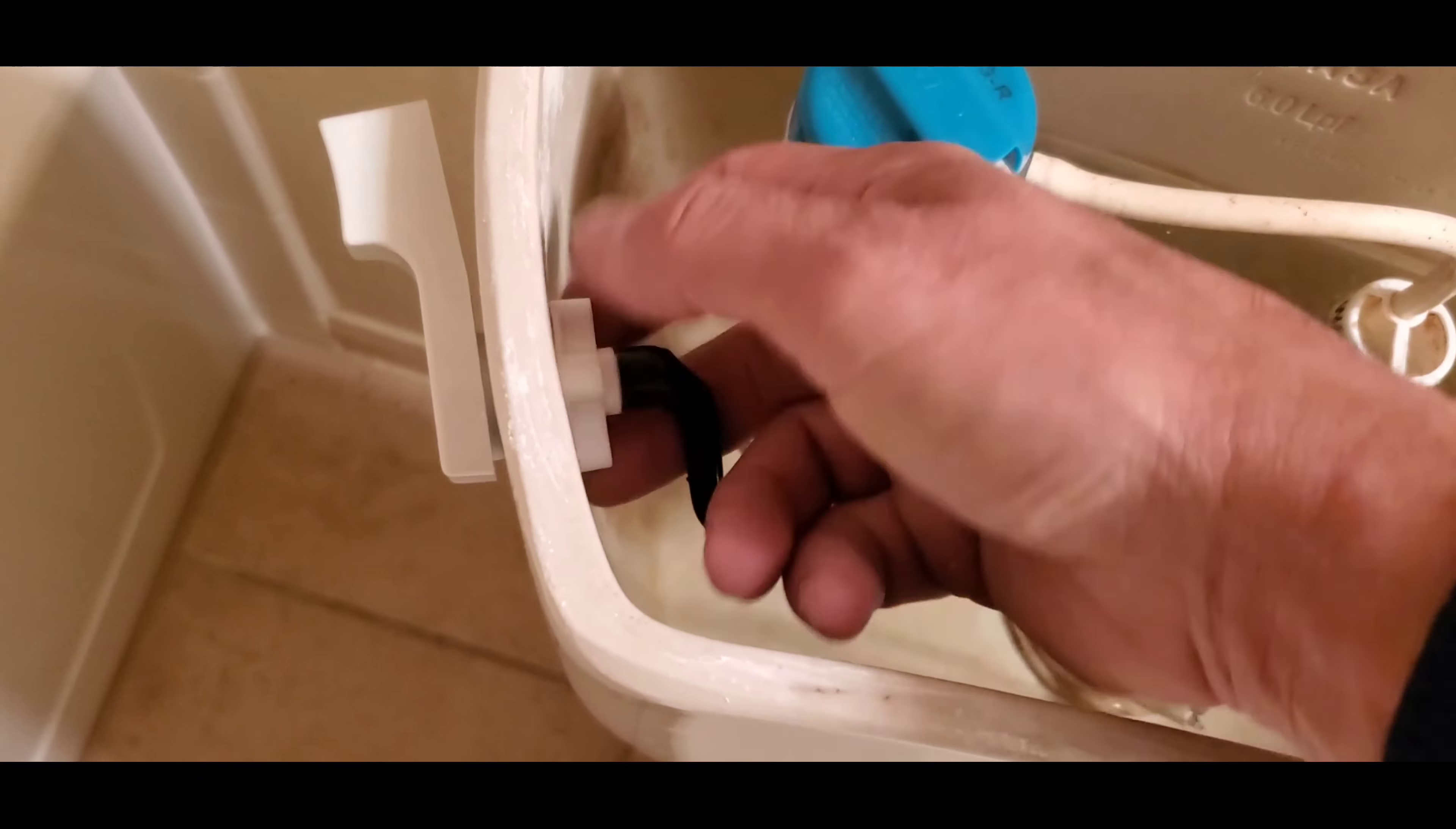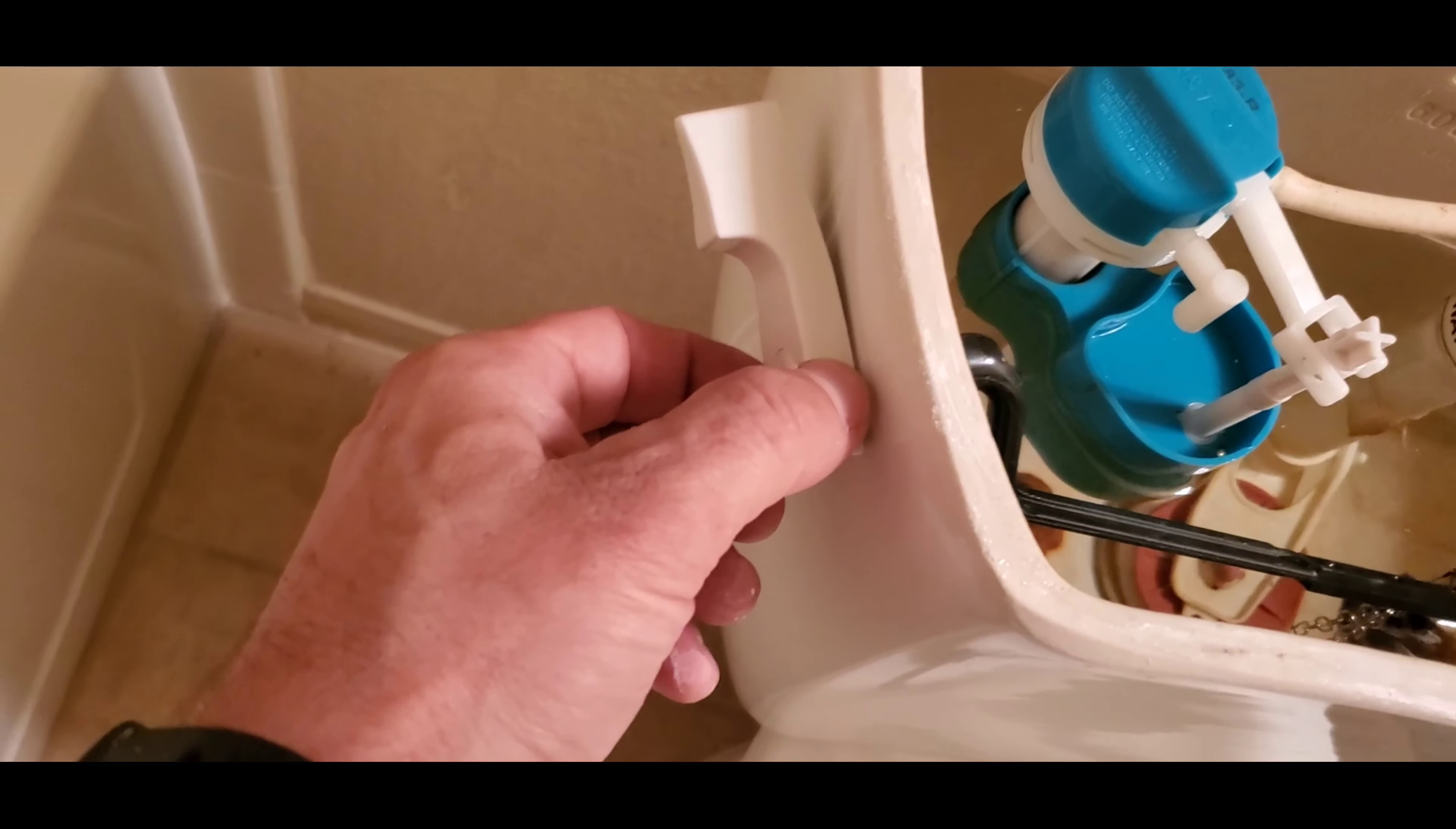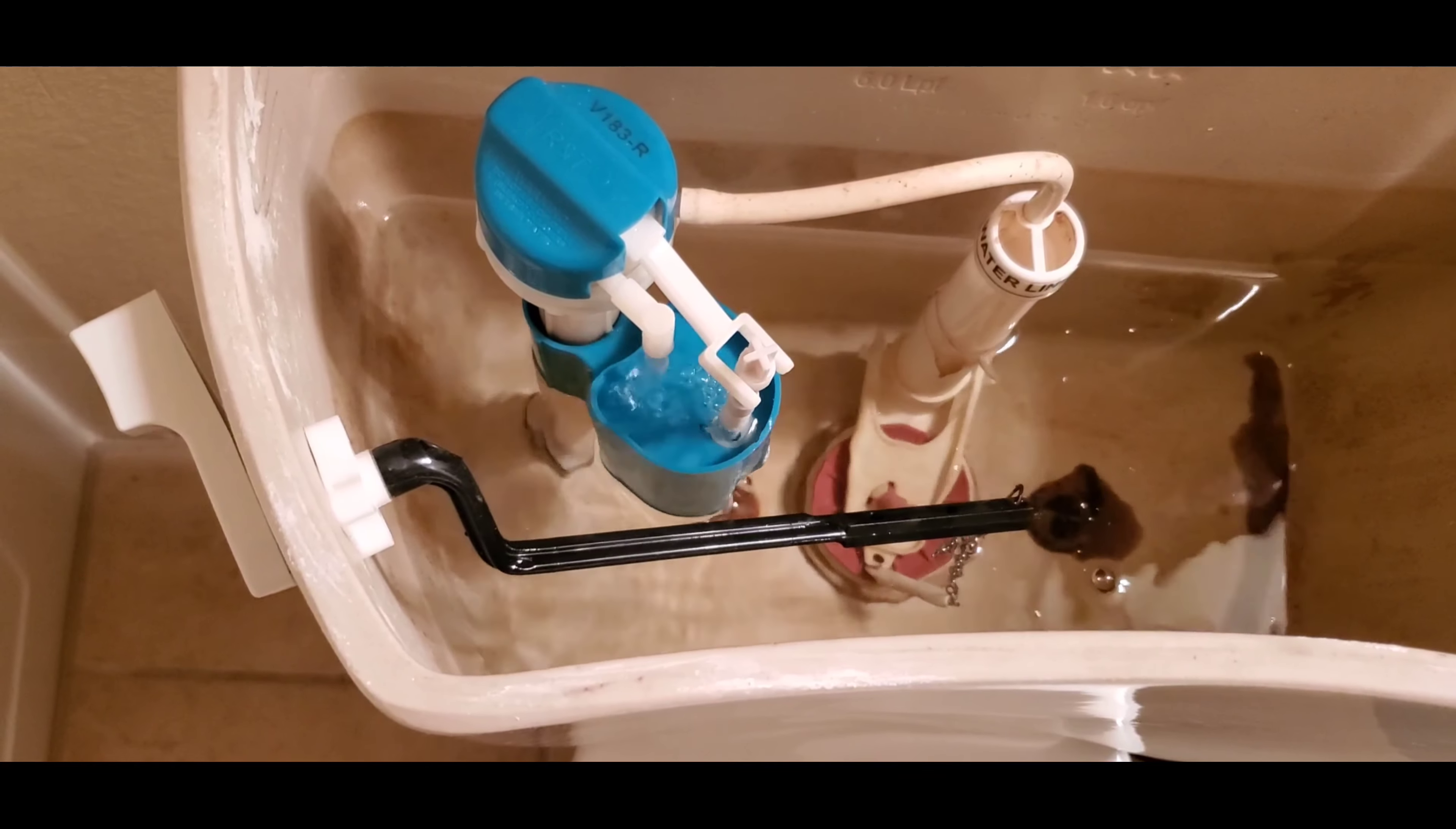And all it needs to be is hand tight. That's perfect. Now we can test it. We can see we got rid of all that play. It no longer moves in and out. Let's try flushing the toilet. Perfect. So to tighten it, turn it left.